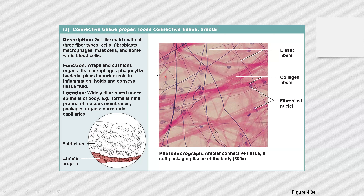In the histology slide, those dark lines are collagen fibers. Thin darker lines are elastic fibers, and reticular fibers cannot be identified on this photomicrograph. We also see fibroblasts — the cells that actually secrete all those fibers. You cannot see the cell body clearly, but the darker parts staining in the slide are the nuclei of fibroblasts.